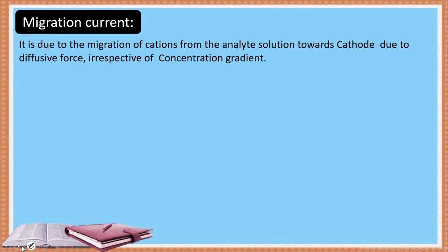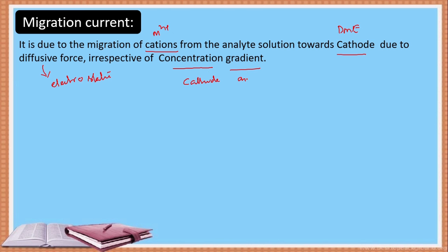What is migration current? It is due to the migration of cations — that is, metal ions — from the analyte solution towards the cathode, which is the dropping mercury electrode. This is driven by electrostatic force, irrespective of concentration gradient. When metal ions migrate towards the dropping mercury electrode across cathode and anode, the resulting change in current is called migration current.